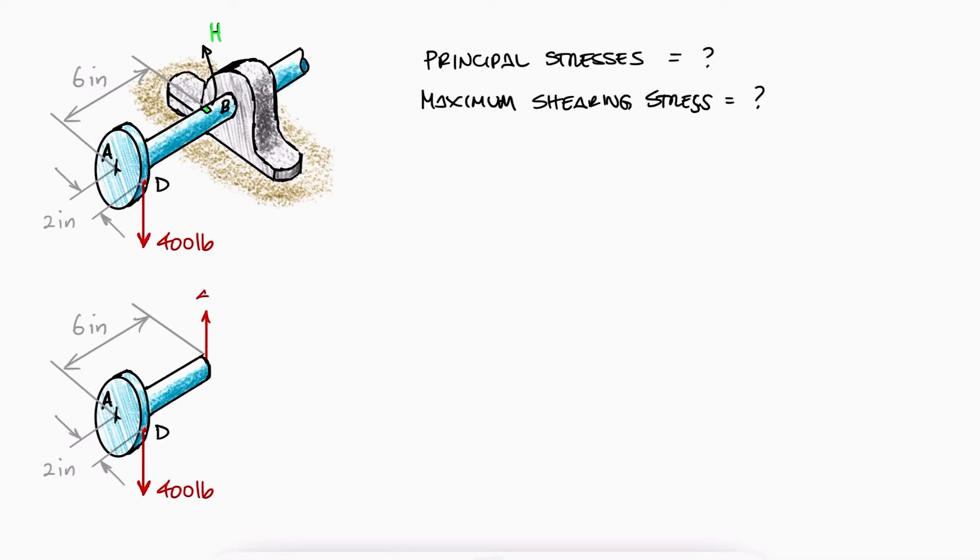there will be a reaction in the vertical direction, a torque reaction T equal to 2 times 400, and a bending moment M. The bending moment revolves around the x-axis and is equal to 6 times 400.